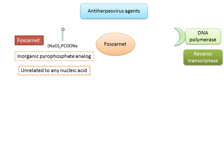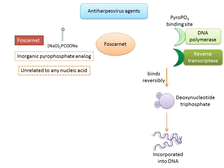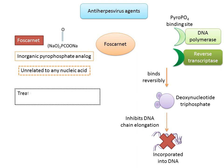Foscarnet's mechanism of action: it is taken up slowly by cells and does not undergo significant intracellular metabolism. It reversibly blocks the pyrophosphate binding site of the viral polymerase in a non-competitive manner, inhibiting cleavage of pyrophosphate from deoxynucleotide triphosphates. Since deoxynucleotide triphosphates are the building blocks of DNA and lose two phosphate groups when incorporated during replication, foscarnet blocks this step, preventing incorporation into DNA and inhibiting chain elongation. Intravenous foscarnet is effective for CMV retinitis including ganciclovir-resistant infections, other CMV infections, and acyclovir-resistant HSV and VZV infections.